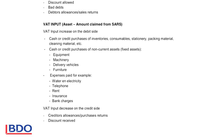VAT input is an asset — the amount that can be claimed from SARS — and VAT input will increase on the debit side because the asset increases on the debit side. You can claim money back from SARS when you buy goods for cash or credit, whether it's inventories, consumables, stationery, packing material, cleaning material, or anything you buy to use or sell in the business. If you buy non-current assets — equipment, machinery, delivery vehicles or furniture — you can claim back the VAT input on those assets. When you pay expenses, you also pay VAT and can claim it back from SARS.